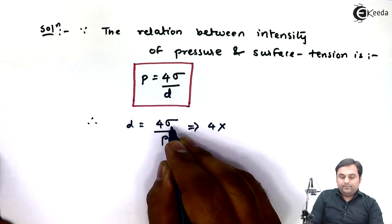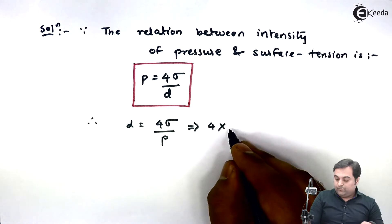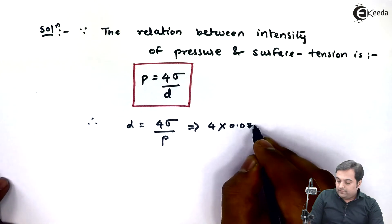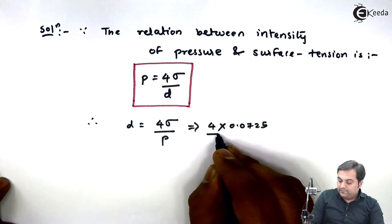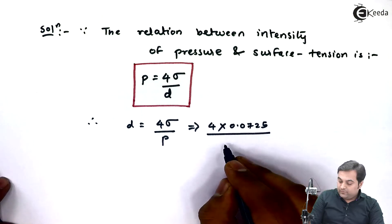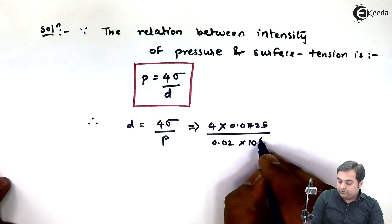So it is 4 into sigma value, that is 0.0725, divided by P which is 0.02 into 10 raised to 4.